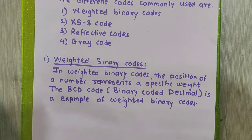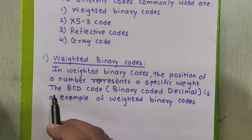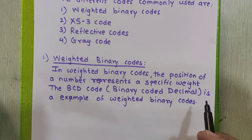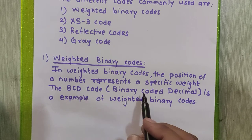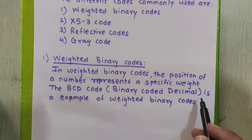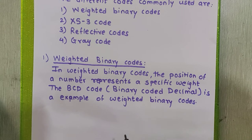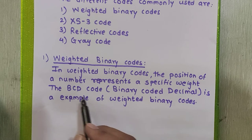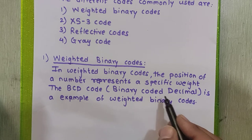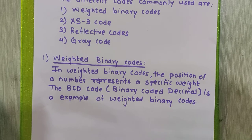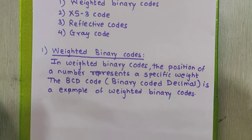What do you mean by weighted binary code? In weighted binary codes, the position of a number represents a specific weight. It means that the bit position always represents certain weight. The best example for weighted binary code is the BCD code. BCD code stands for binary coded decimal, and the valid digits are 0 to 9.